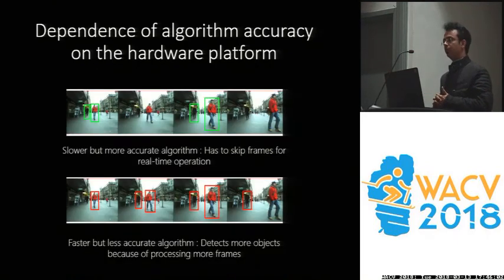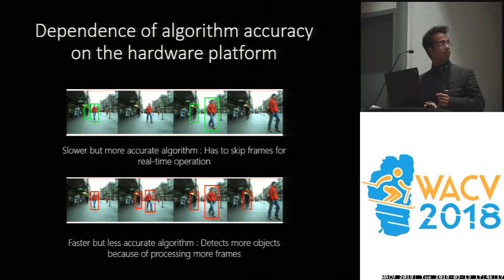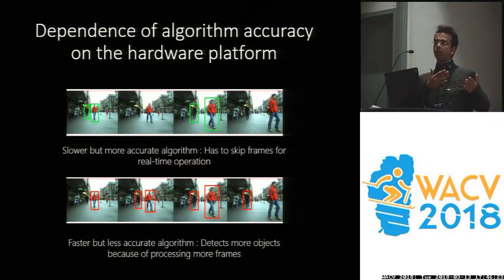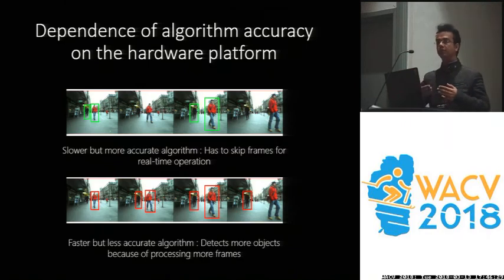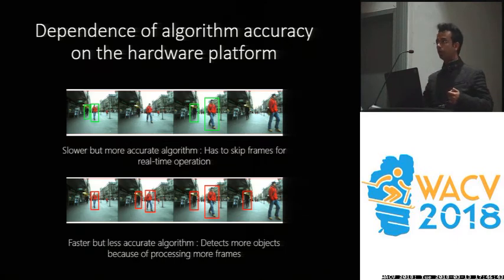The other key idea we have introduced is the dependence of the algorithm accuracy on the hardware platform — or in other words, on the speed at which the algorithm runs. A slower but more accurate algorithm would be able to identify all the objects, but in order to run it would have to skip a lot of frames because it is processing a real-time video. If the processing time is more than the time at which the next frame comes, then frames in between must be skipped to keep up with the network feed.